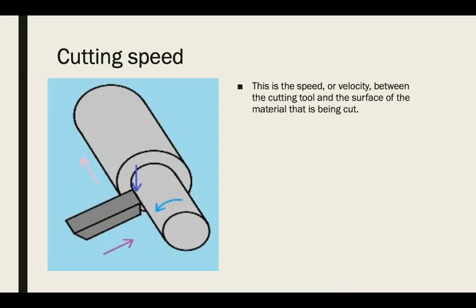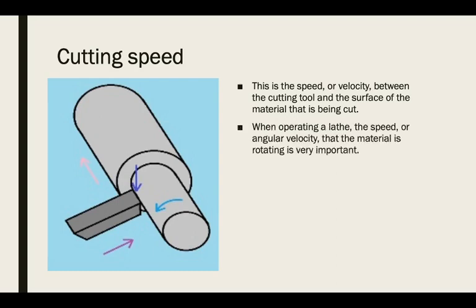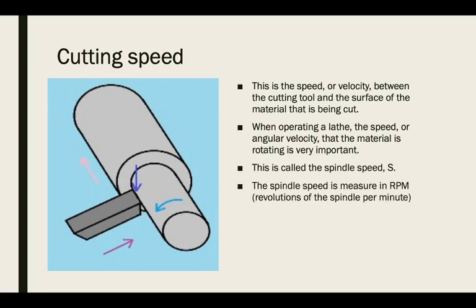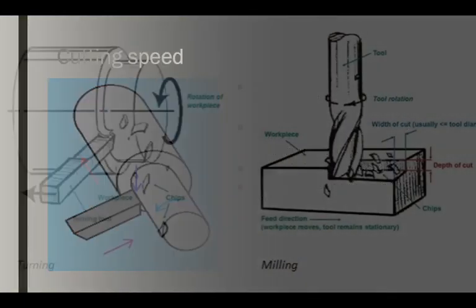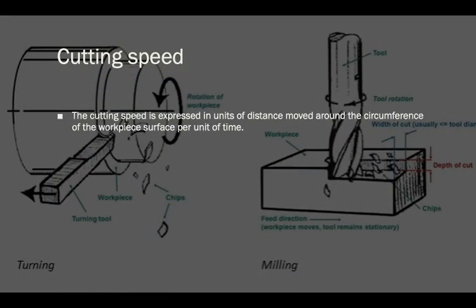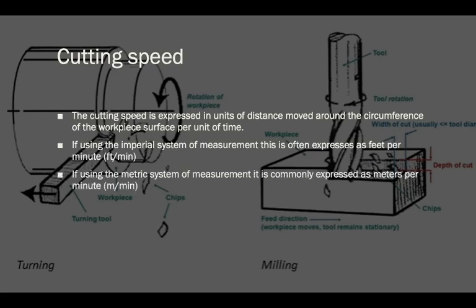The cutting speed is the speed or velocity between the cutting tool and the surface of the material being cut, as shown by the small purple arrow on the diagram. When operating a lathe, the angular velocity at which the material is rotating is very important. This is called the spindle speed, or S, measured in RPM — revolutions of the spindle per minute. The cutting speed is expressed in units of distance moved around the circumference of the workpiece surface per unit of time: feet per minute in imperial, or meters per minute in metric.